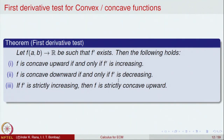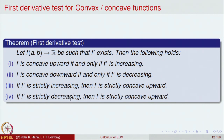The third condition is a one-way condition. It says that if the derivative of a function is strictly increasing, then one can conclude that f is strictly concave upward. Similarly, if f' is strictly decreasing, then f is strictly concave downward. That is the conclusion.